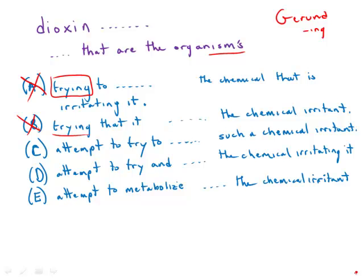Answer choices C, D, and E begin by replacing that with a noun: 'the organisms' attempt.' That's much better. In C and D, what we get is this awkward phrase 'attempt to try'—that's completely redundant. You don't say 'I'm going to attempt to try something,' just 'I'm going to attempt something.'